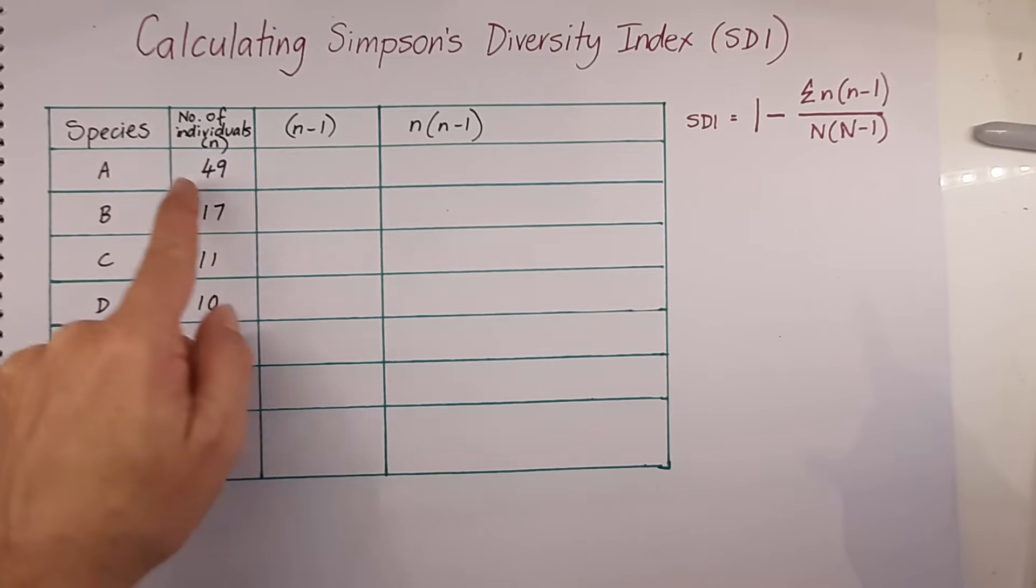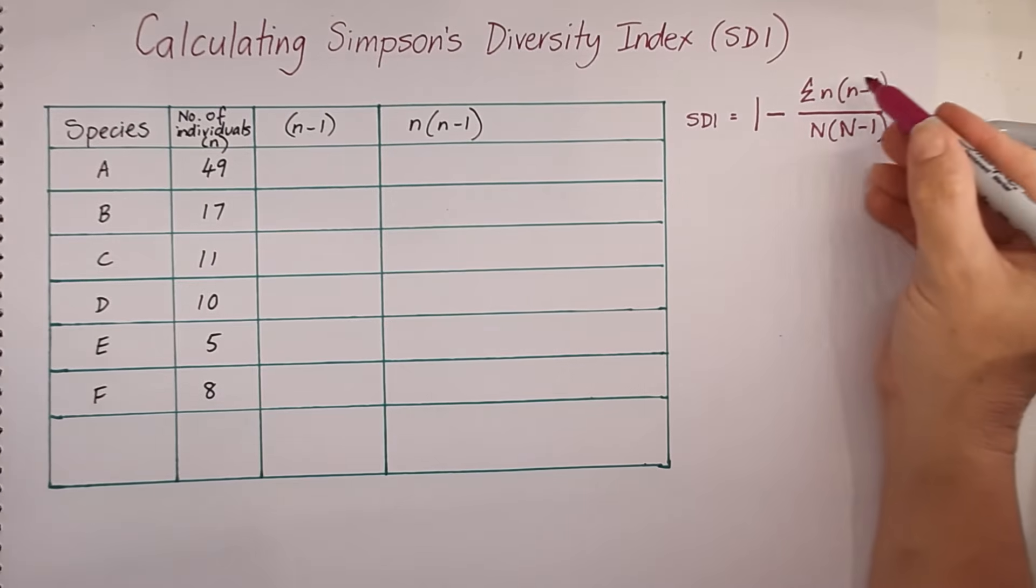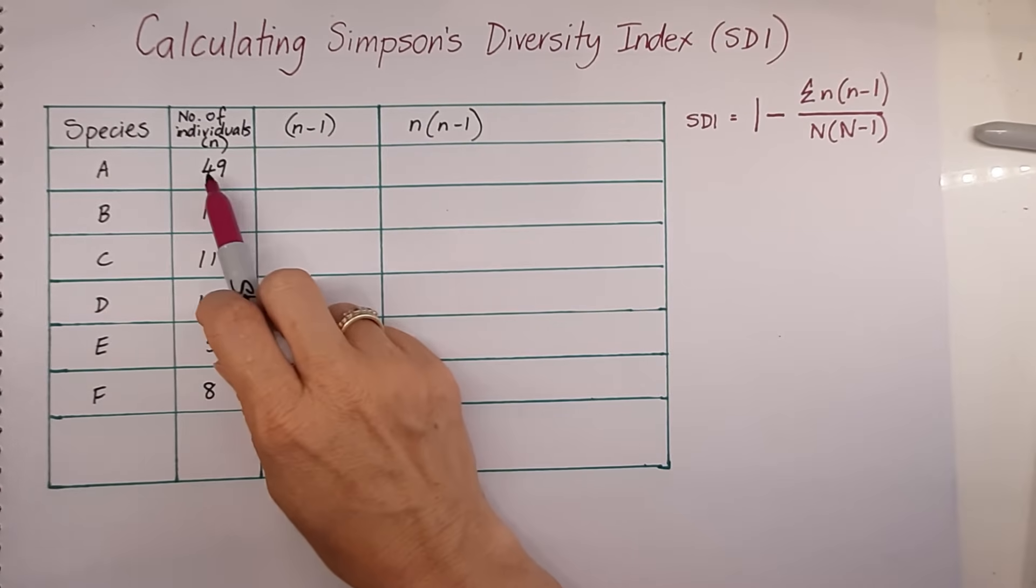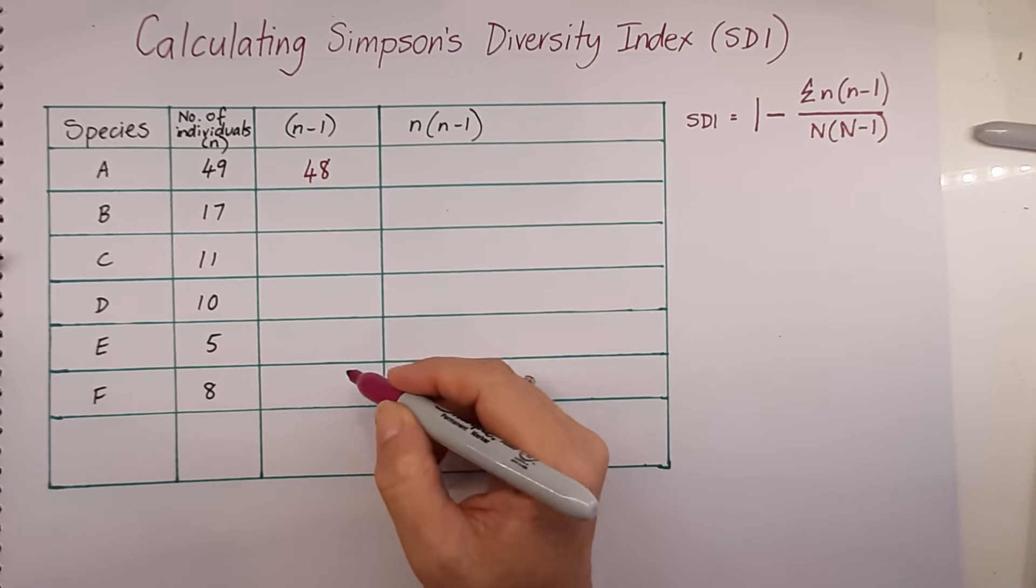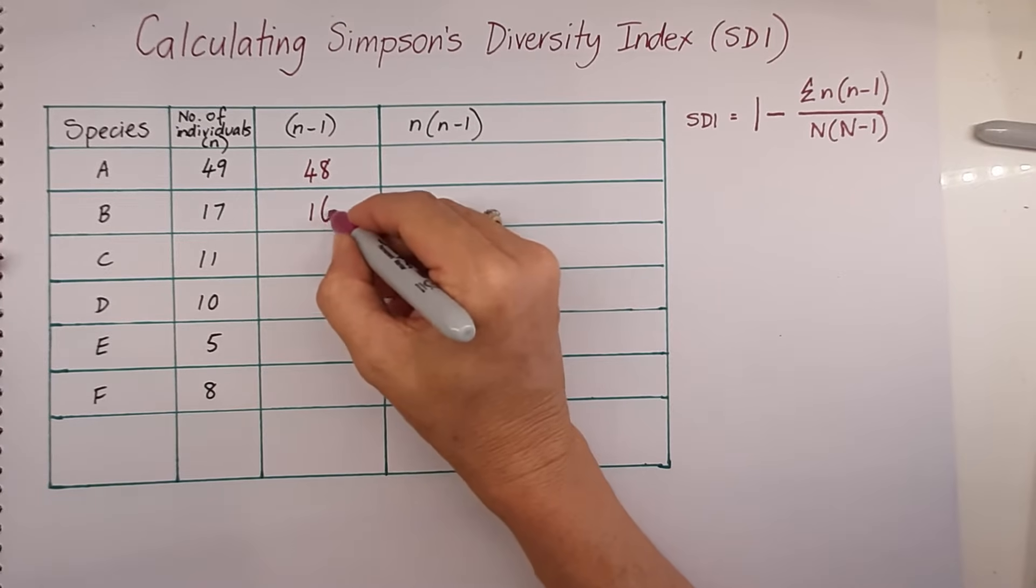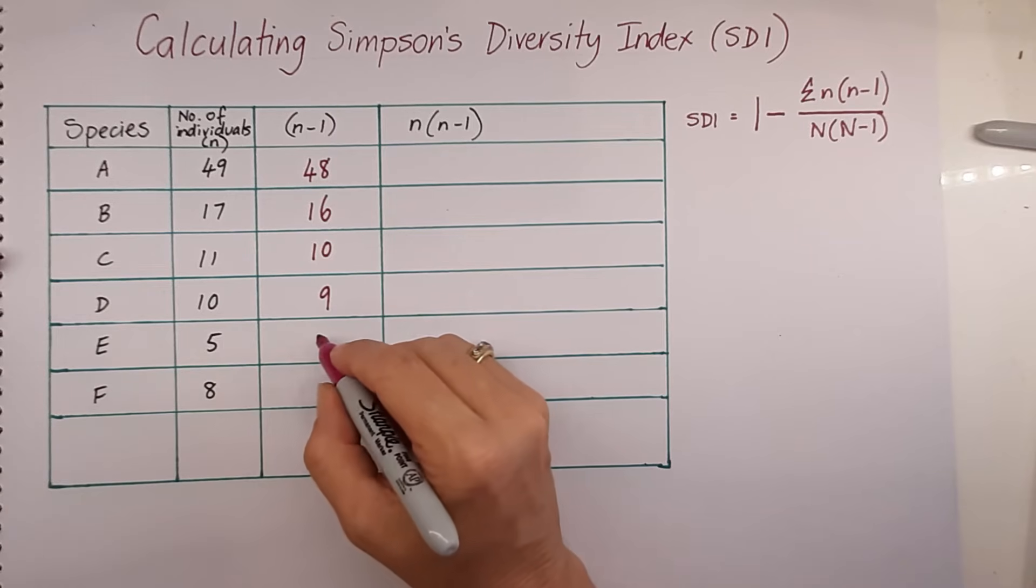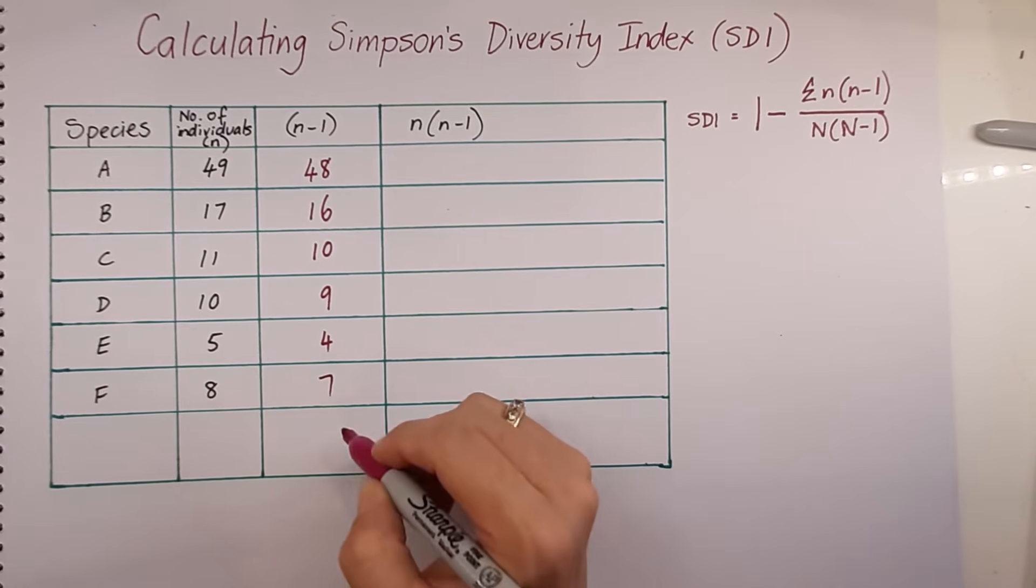Little n stands for the number of individuals of each species that are found in that community. In order to use this formula, we also need to find n take 1. So that's just this number, subtract 1. So in this case, it would be 48. For 17, it would be 16. 11, 10, 9, 5 would be 4, and 8 take 1 would be 7.